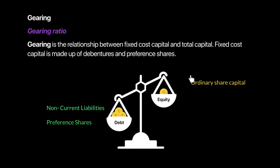Equity refers purely to ordinary share capital — these are the real owners of the company. A company can raise money by either issuing equity (ordinary shares) or through non-current liabilities and preference shares, which are fixed cost capital. Gearing measures the proportion of equity versus the proportion of debt the company holds.